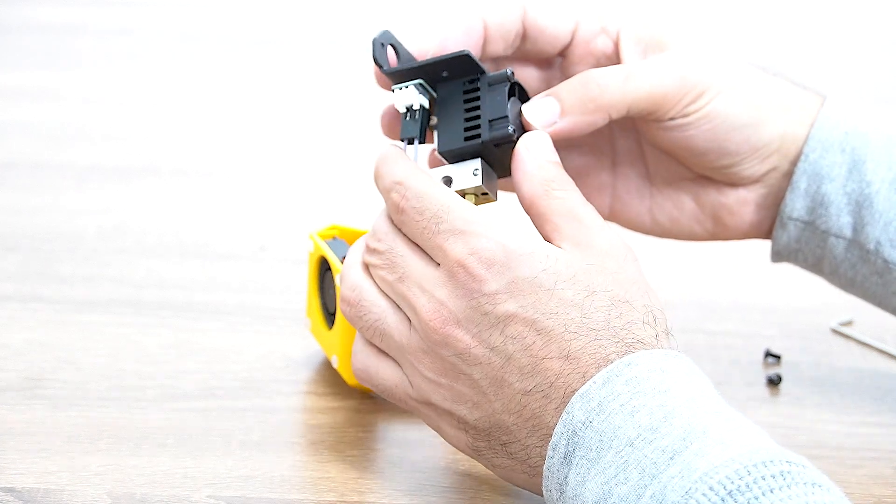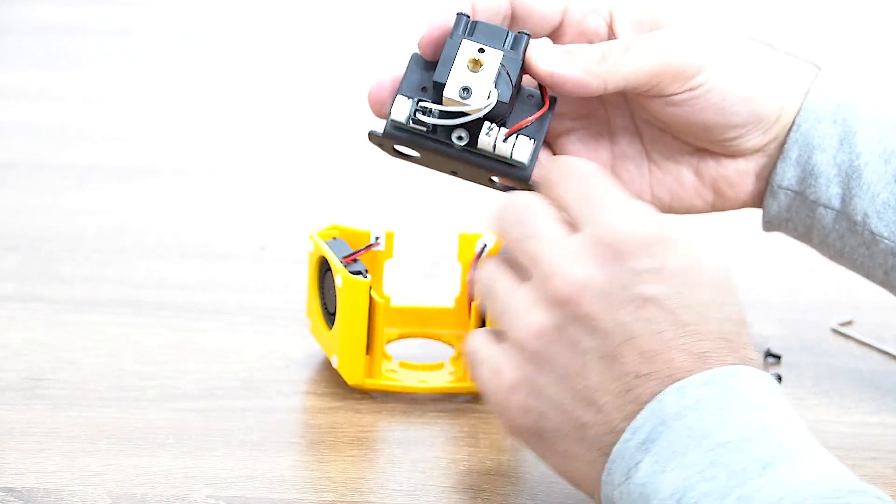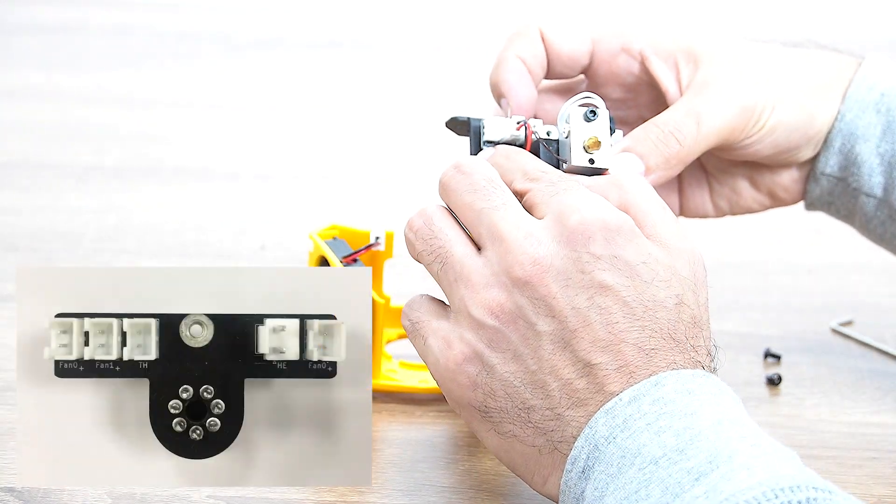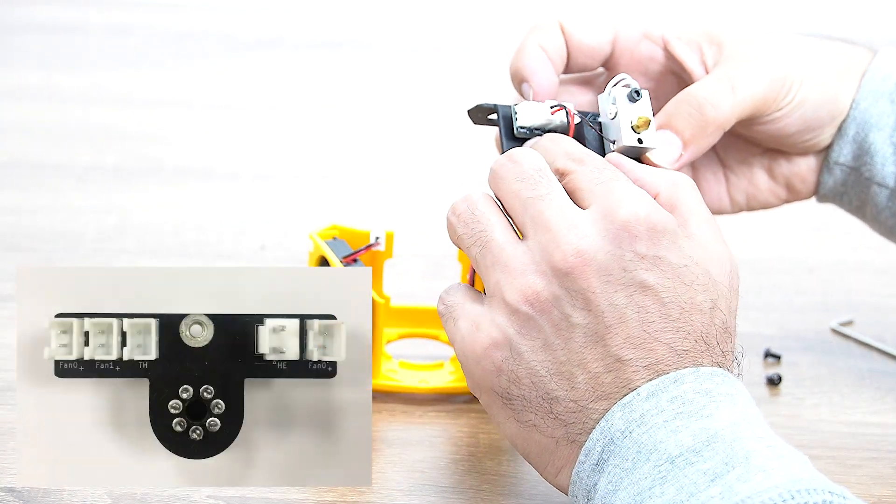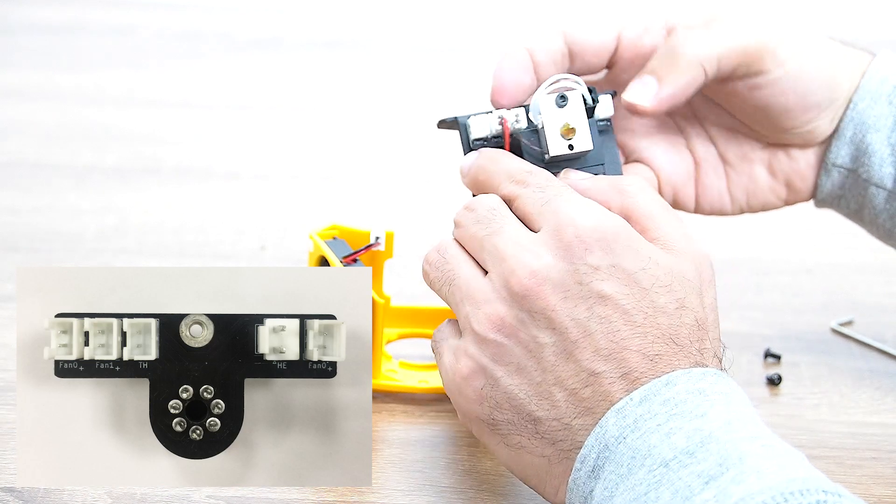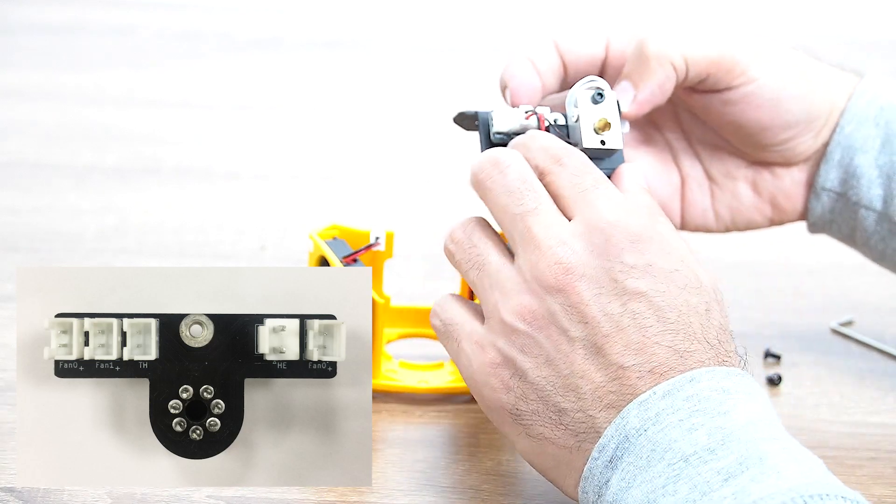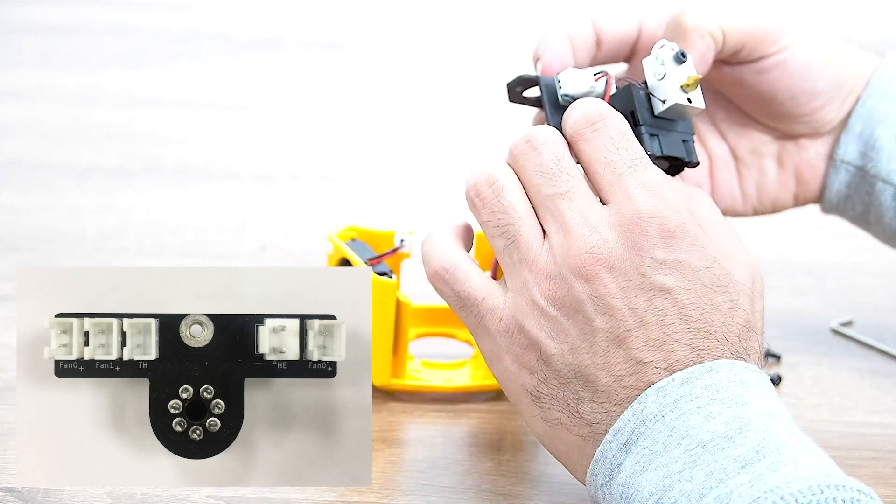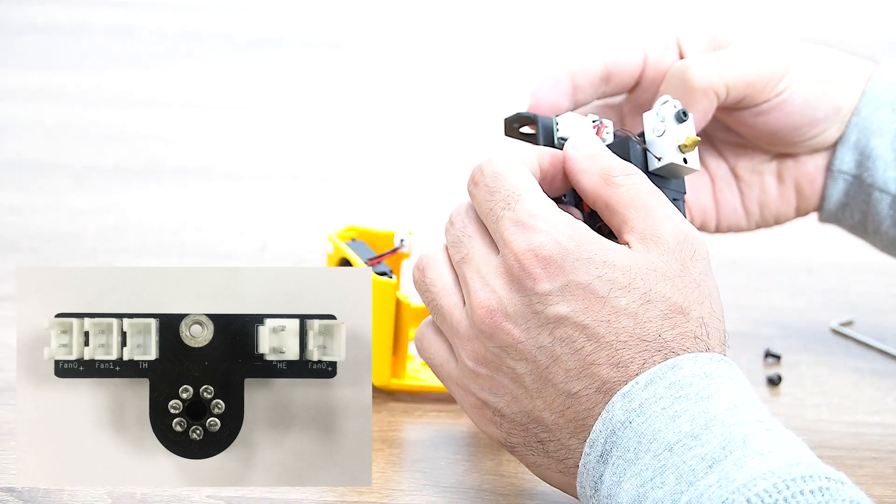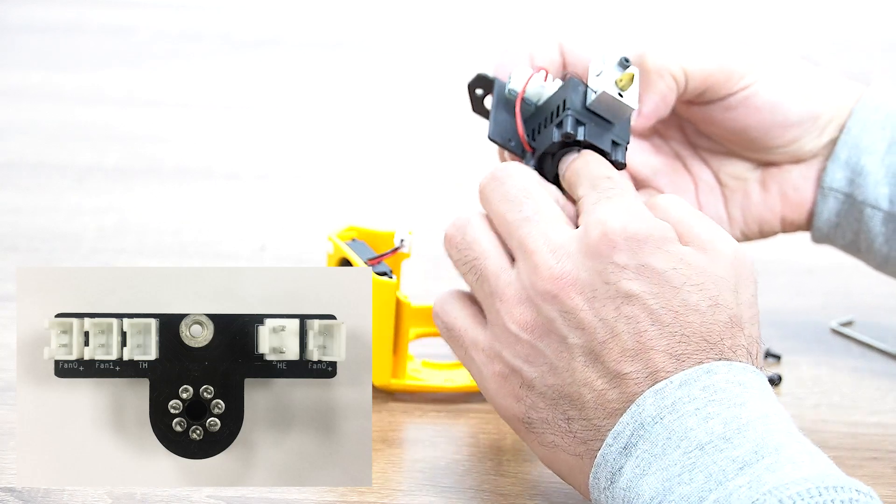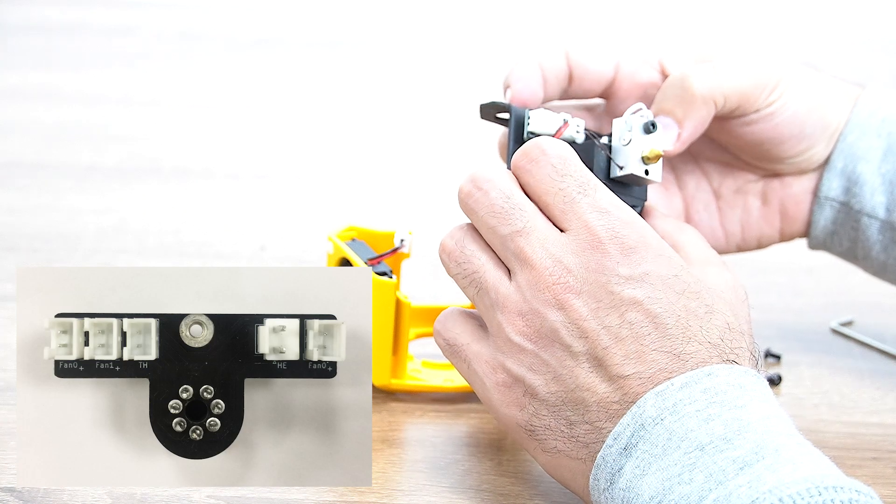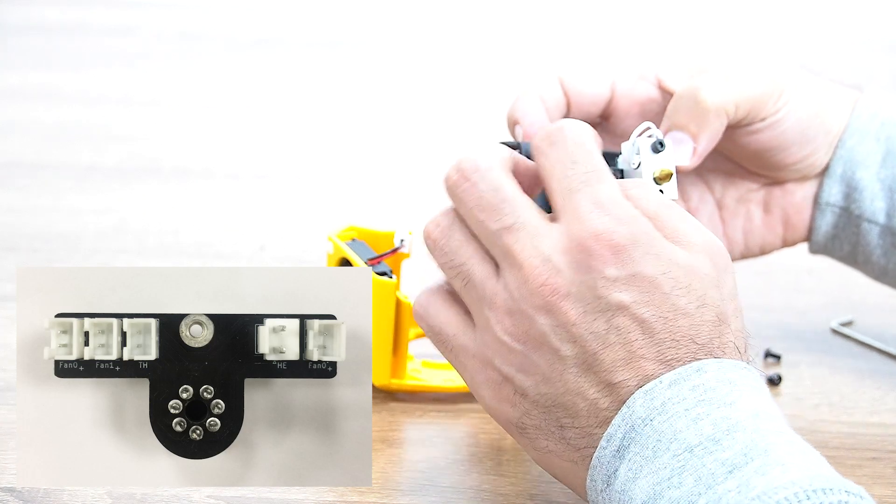Take a closer look. As I said, there are letters written down here on the board. Fan zero, we do have two fans zero, which is for these two fans actually, and the fan, there is another one, fan one, which is for the front one, the one stuck to the heat sink.